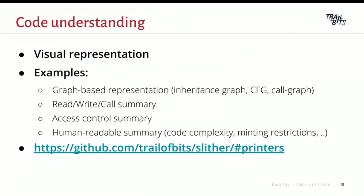We have what we call printers, which are visual representations of the codebase. You can take a contract, extract information from it, and represent that information in different ways. We have many graph-based representations — for example, the inheritance graph or the call graph of the program. We also have printers that show a summary of contracts, such as the access controls, the code complexity, or, if you have a token, quick information like the minting restrictions. All of these printers are open source, and you'll find the documentation at the provided link.